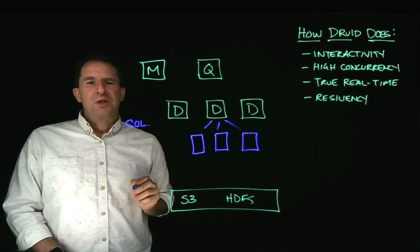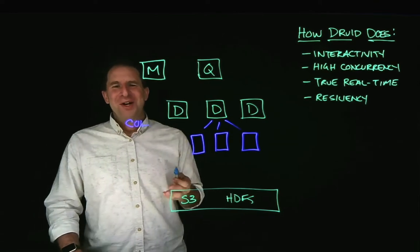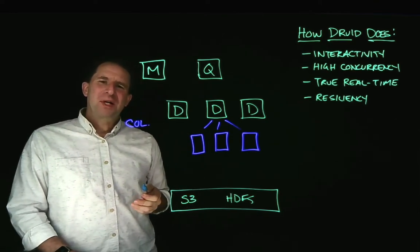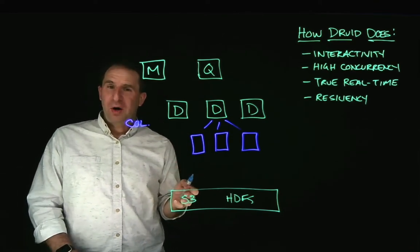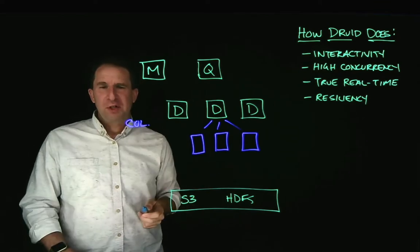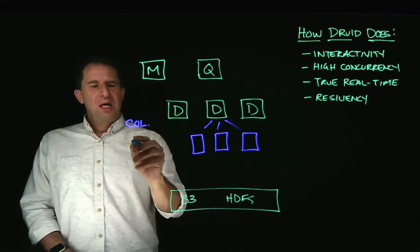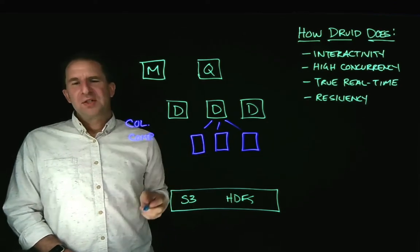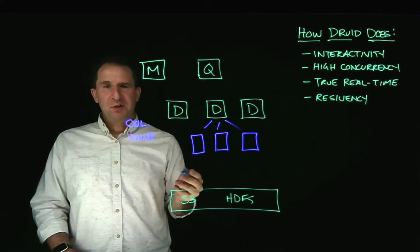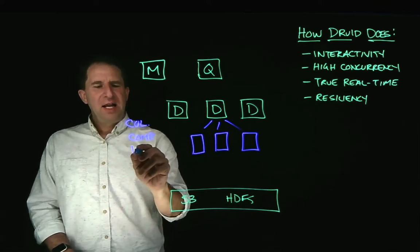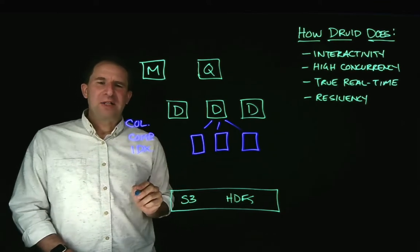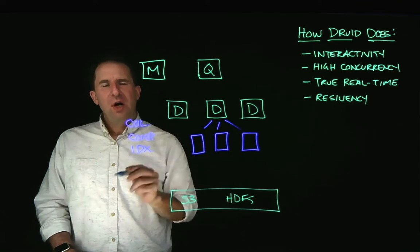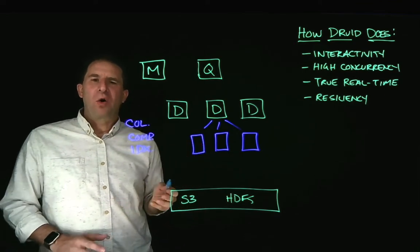They are columnar, which is good because columnar is the best structure for an analytics database, because if you only need to query some of the columns instead of all of them, it just retrieves only those columns. Columnar databases are also excellent with compression. So every one of the segments here is compressed to save space and make it more efficient. And everything is also automatically indexed. And the index is stored right there on the data segment along with the data.